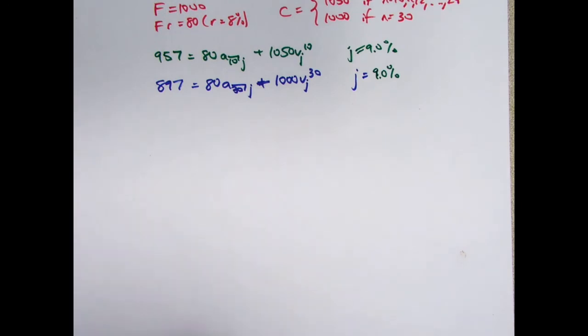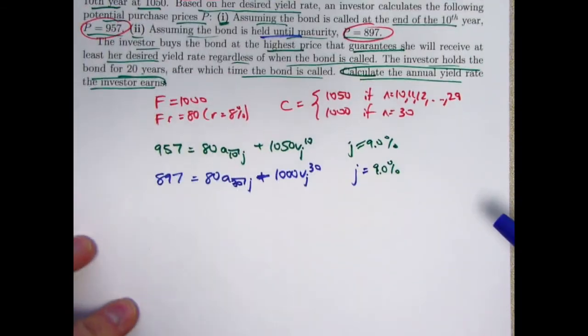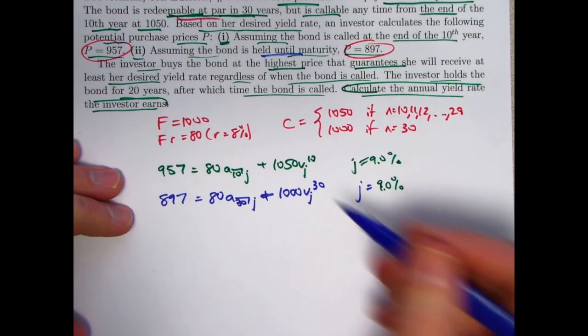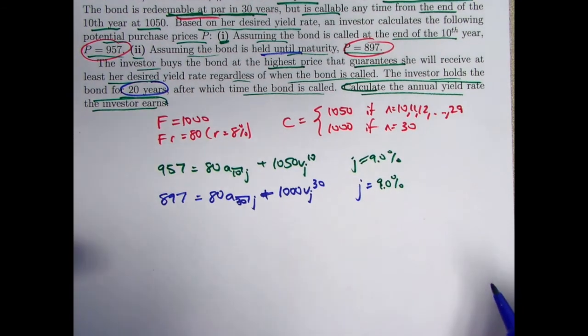Alright, so that would be the yield based on those conditions. But what actually happens is the bond is called at year 20. N equals 20. Again, annual coupons.